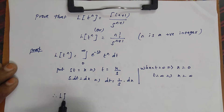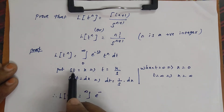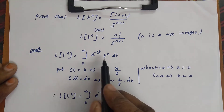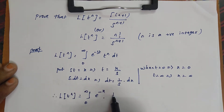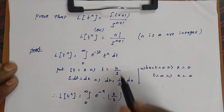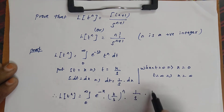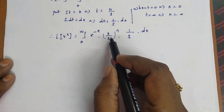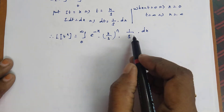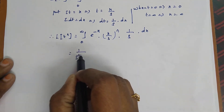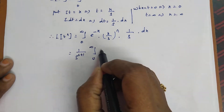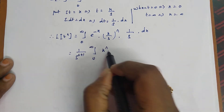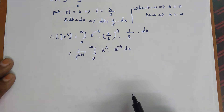Therefore, L of t power n equals integral from 0 to infinity of e power minus x, since st equals x, into t power n, which is x by s whole power n, into dt, which is 1 by s dx. We take 1 over s power n and 1 by s outside, giving 1 by s power n plus 1 times the integral from 0 to infinity of x power n into e power minus x dx.